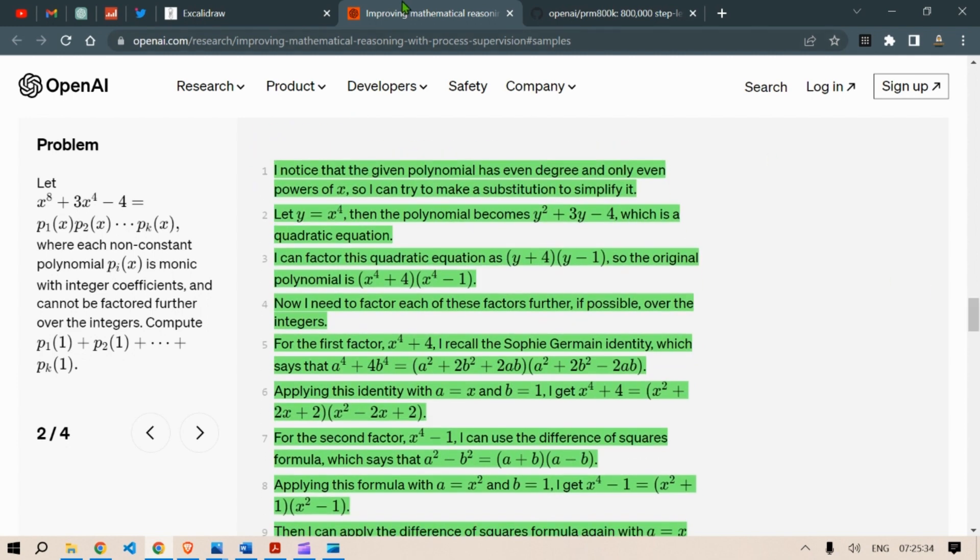I noticed that the given polynomial has even degrees, x to the power 8 and x to the power 4, and only even powers of x square. So, I can try to make a substitution to simplify it, that y is equal to x to the power 4. Then, our polynomial becomes y squared plus 3y minus 4, which is a quadratic equation. I can factor this quadratic equation as y plus 4 and y minus 1. Okay, so the original polynomial is x to the power 4 plus 4 and x to the power 4 minus 1, because they have replaced the y's with the x to the power 4.